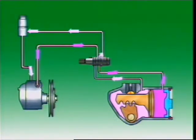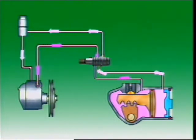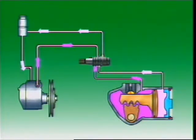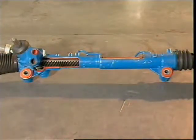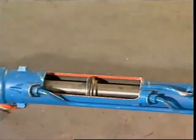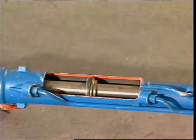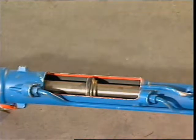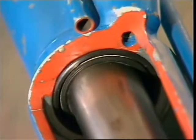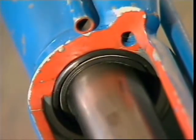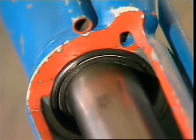Pressure applied to either side of the piston produces a force which is transferred through the teeth to help turn the pitman shaft. In a rack and pinion steering gear, the piston is formed centrally on the steering rack and the rack housing provides the working cylinder. Seals at each end of the cylinder isolate the power section from the rack and the helical pinion.